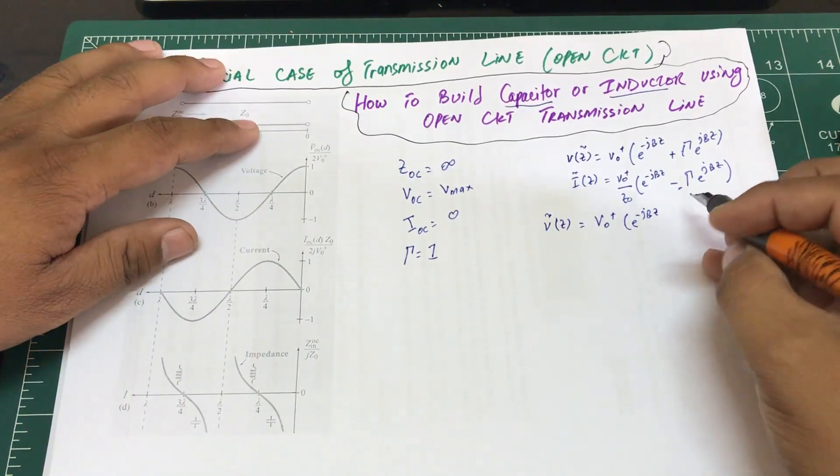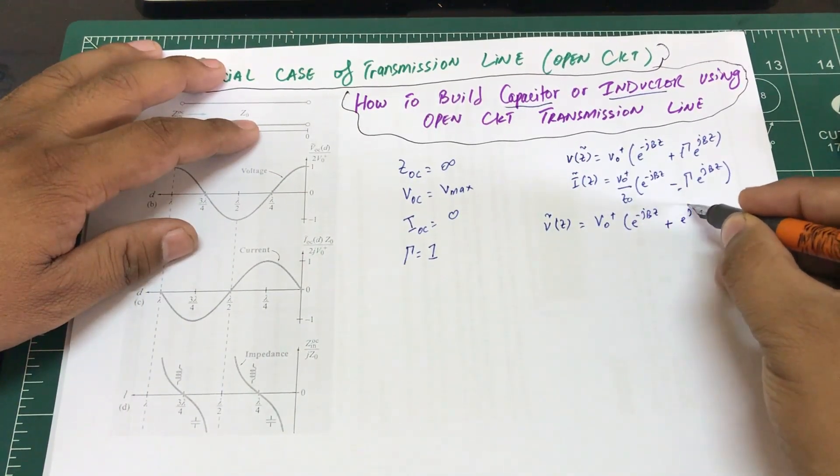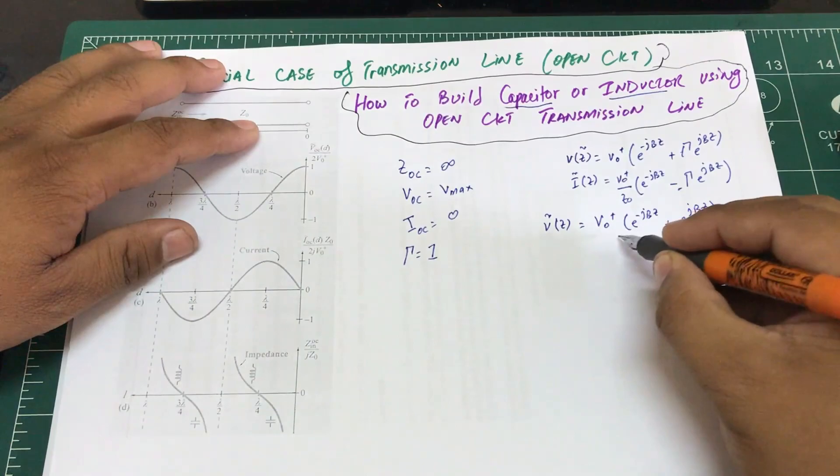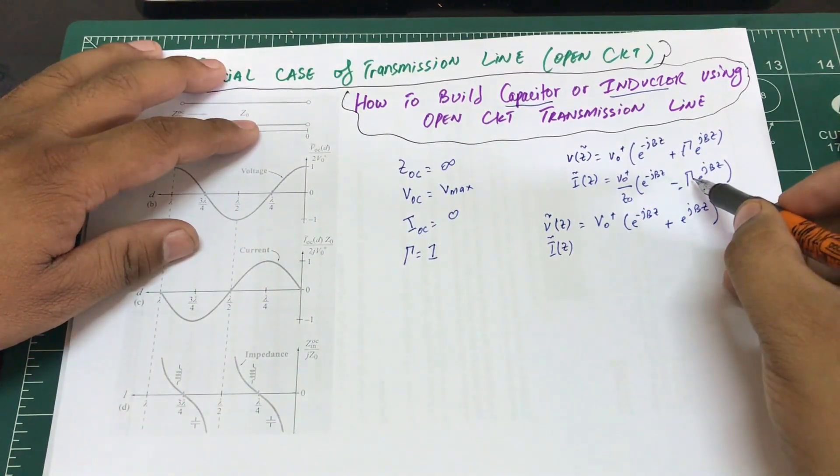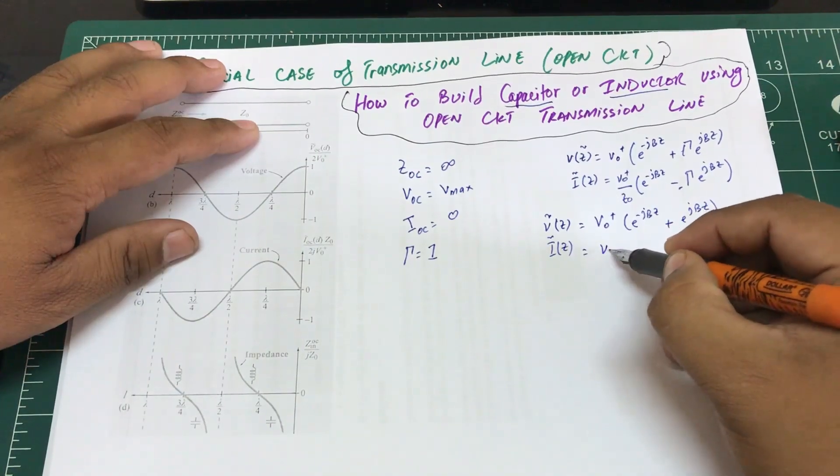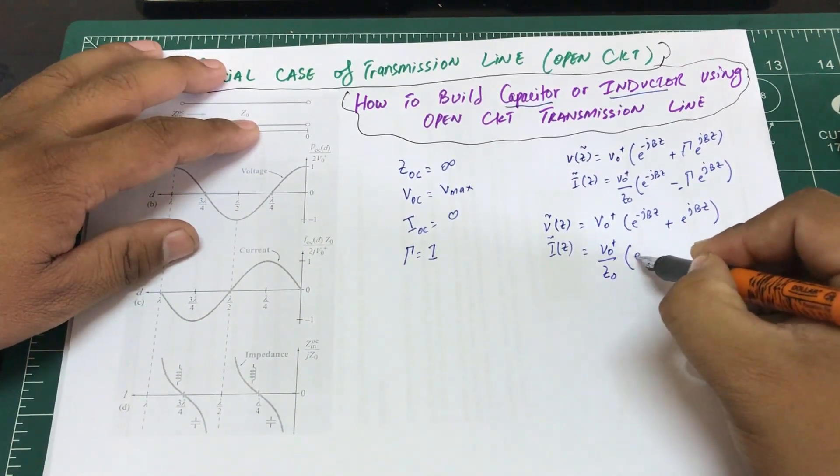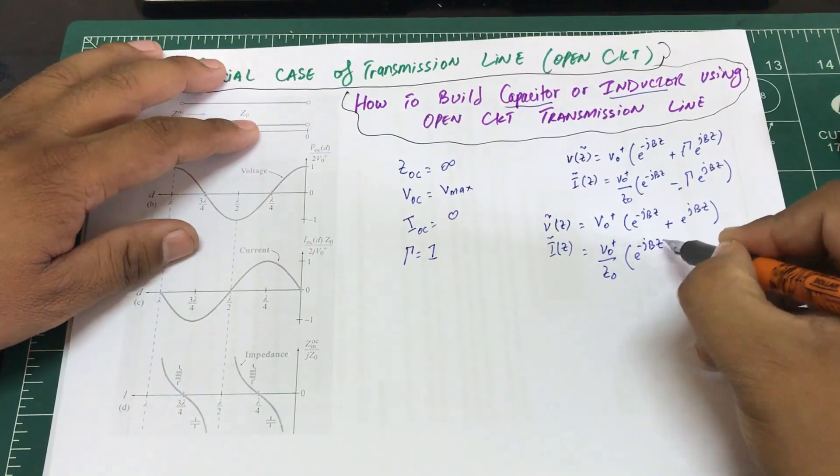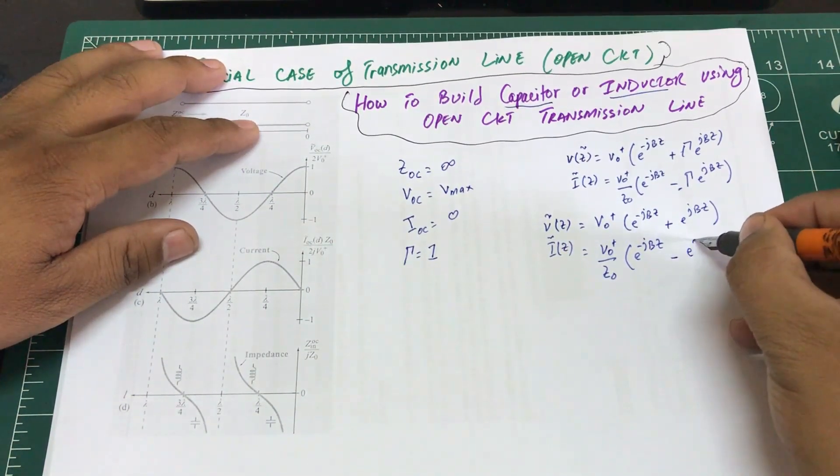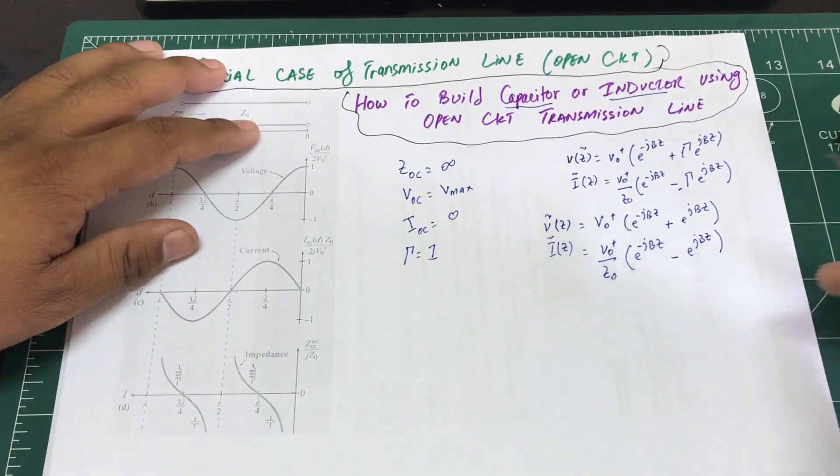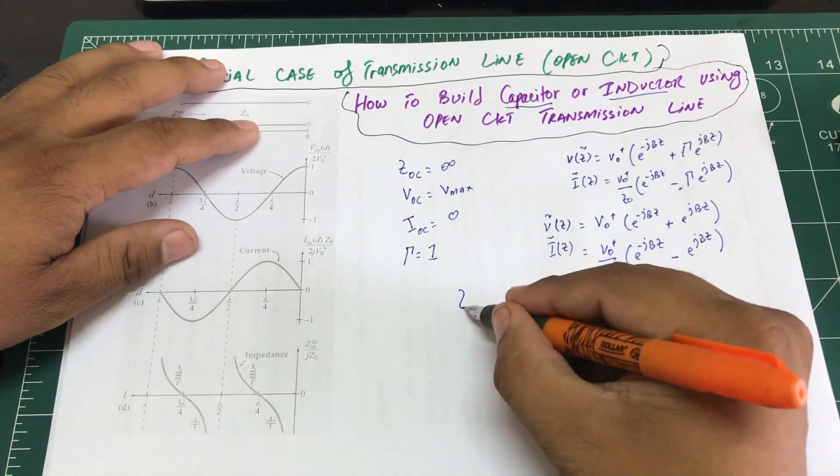Then I(z), this will remain unchanged. In place of reflection coefficient, I'm just going to simply plug in one, so this will remain unchanged, which is going to be e^(-jβz) - e^(jβz). Now, Z open circuit evaluated at z evaluated at negative l - that's the location of that line.